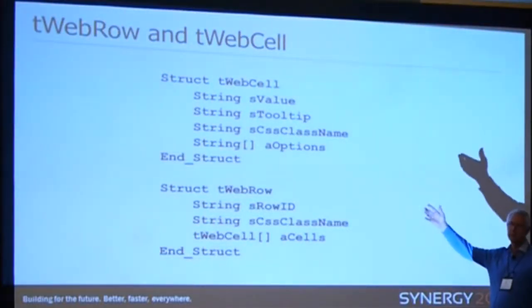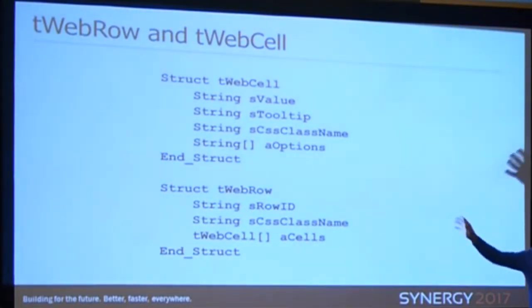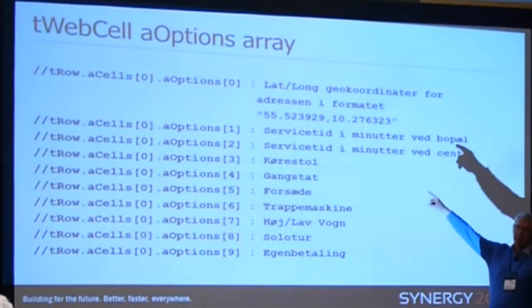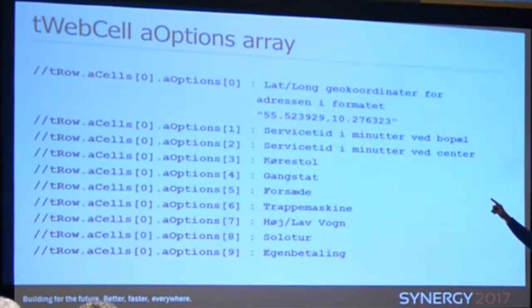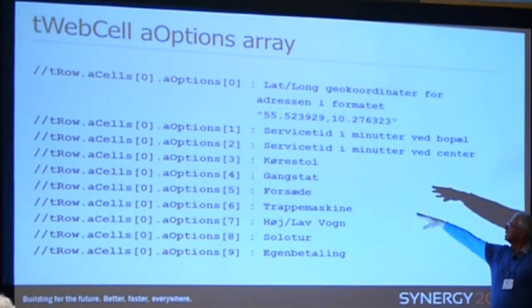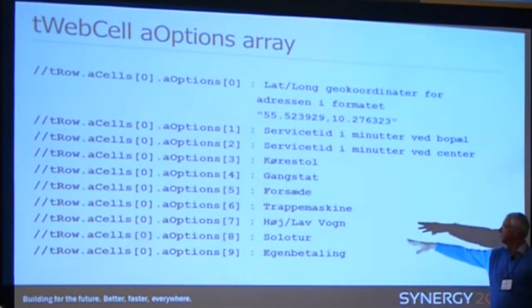Each cell in the array has a value — what will be shown in the list. You can assign it a tooltip and give each cell its own CSS class. There is also a bunch of options which, by default, are not used, but you can use them for anything. What I do is store different information for the people going with the bus — for example, the XY location, service time at pickup and delivery, whether a wheelchair is needed, whether it needs a front seat, or whether it requires a high or low car. All this is packed into the options array.